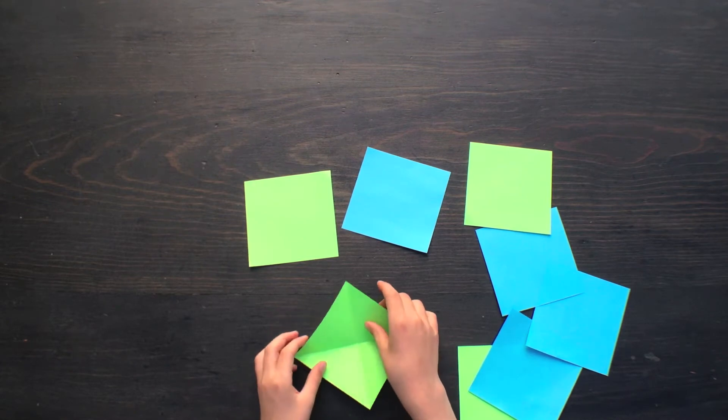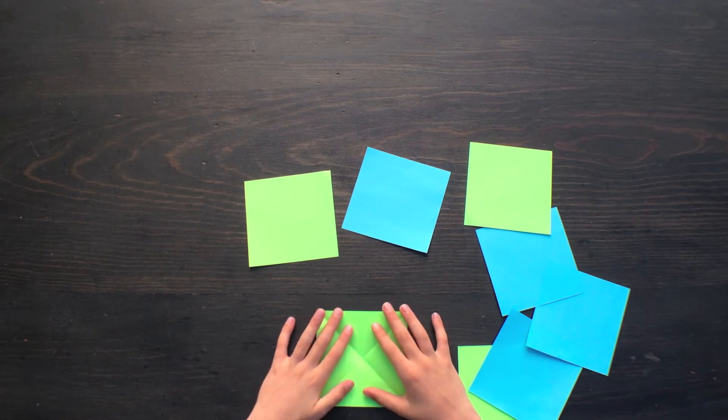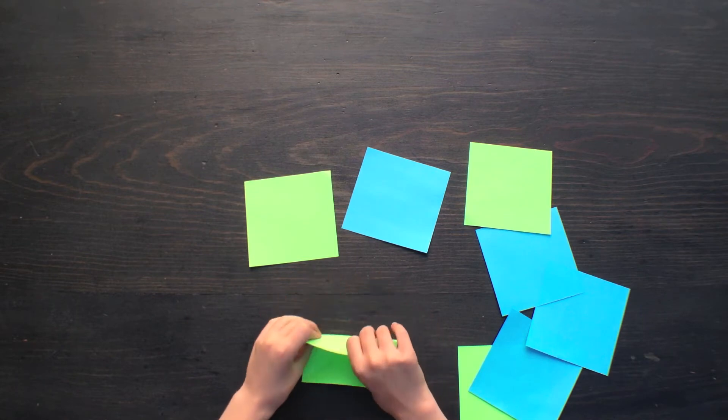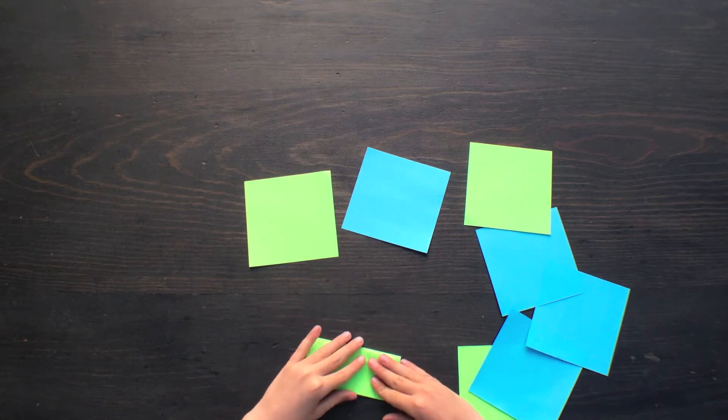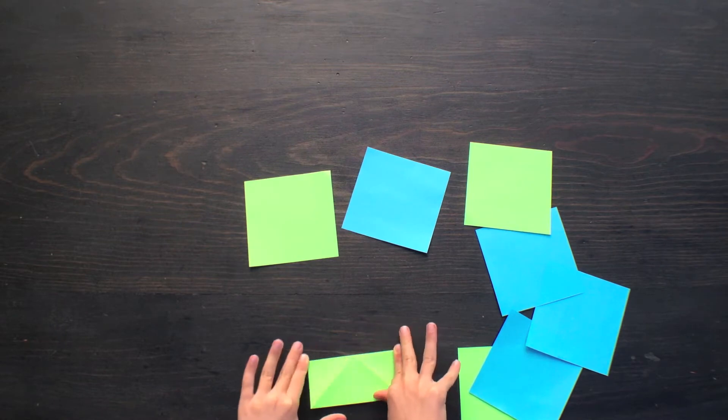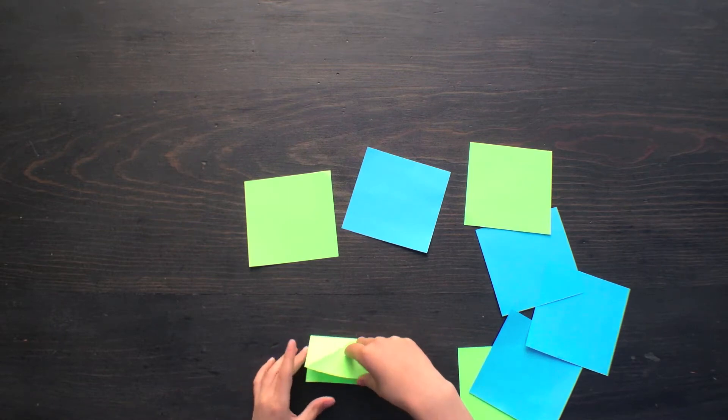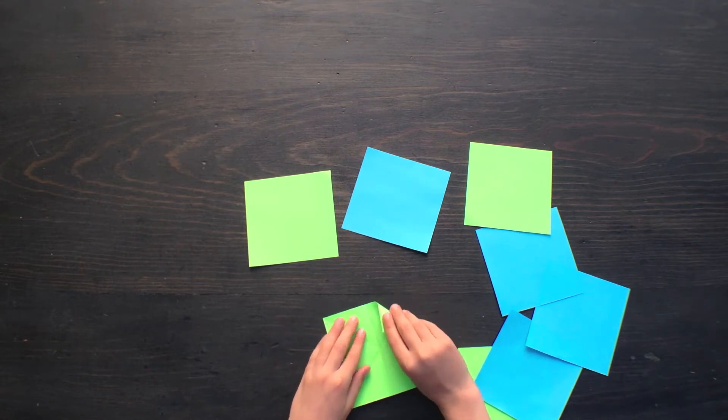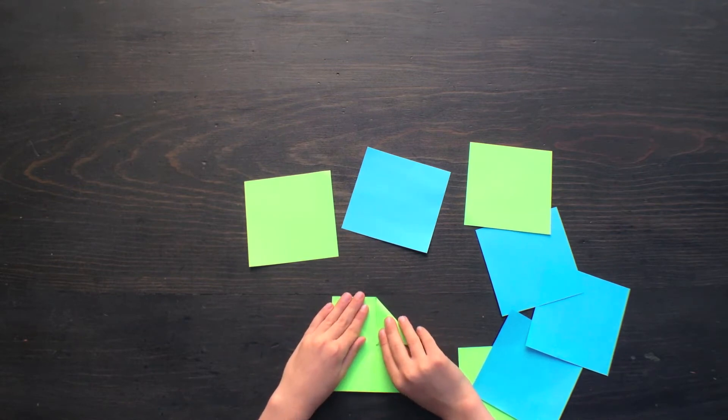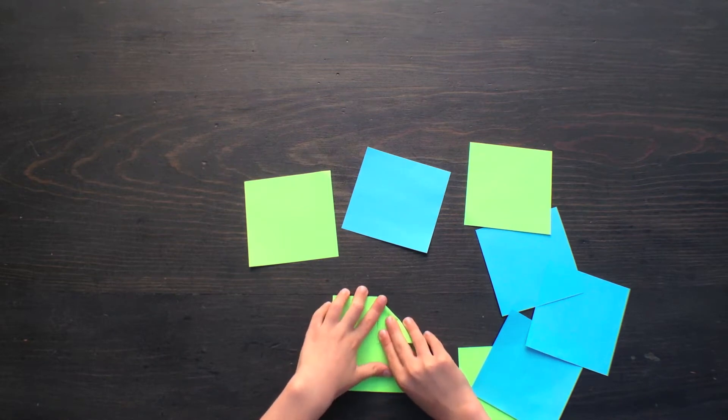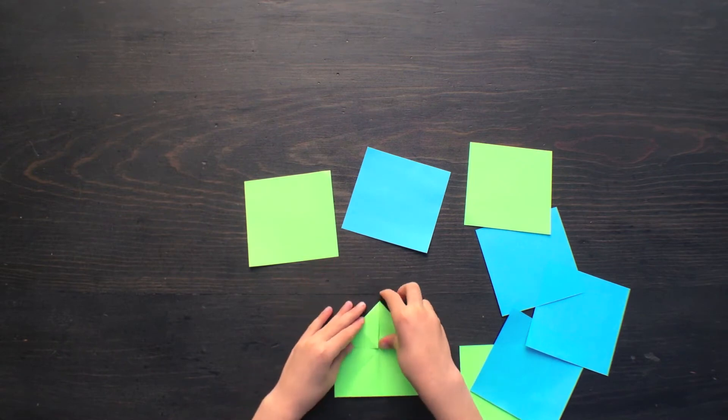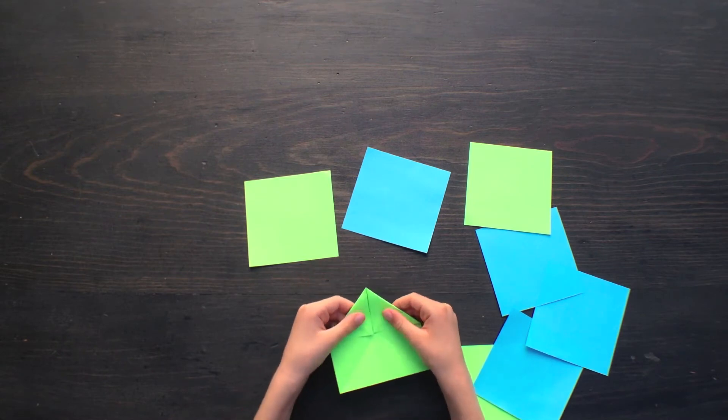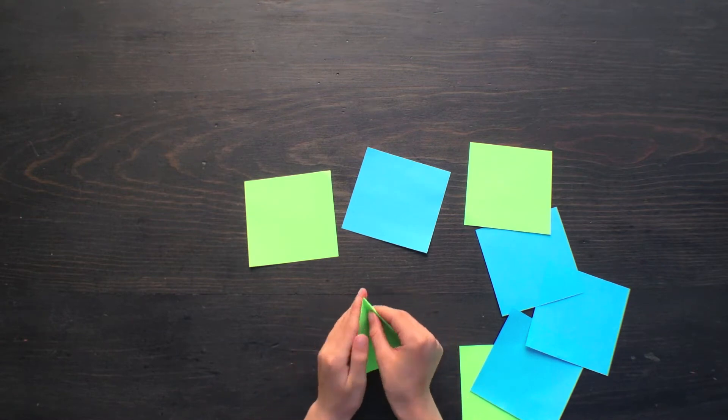Now make it like a square so there's an X, and fold the top down to the bottom like this and unfold it. Now rotate it like this and take one top corner and fold it down to that center line in the middle. Do it with both of them and then fold it in half.